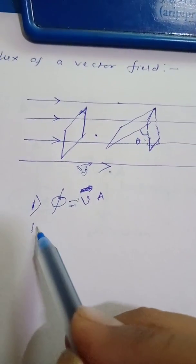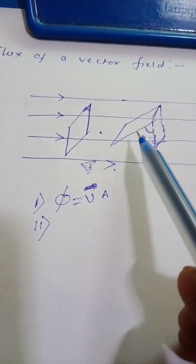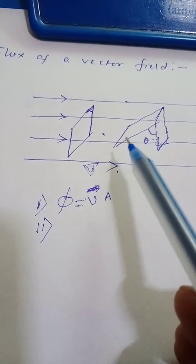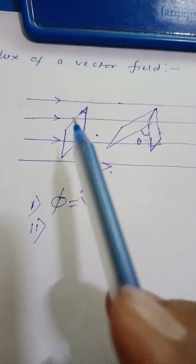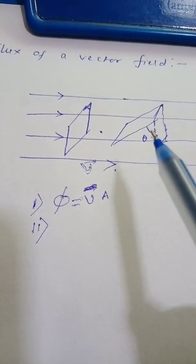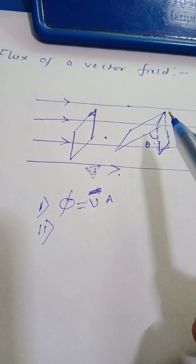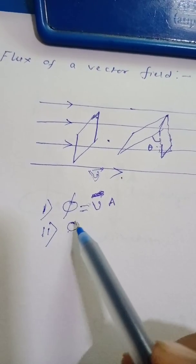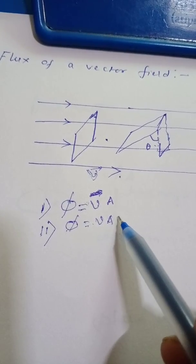Now let us consider the second figure. In the second figure you see that the rectangular loop is a bit tilted, and when it is tilted, you can understand that now less number of lines will be crossing through the area of the loop. If you want to find out the number of lines crossing through this rectangular loop normally, then phi will be equal to V A cos theta.